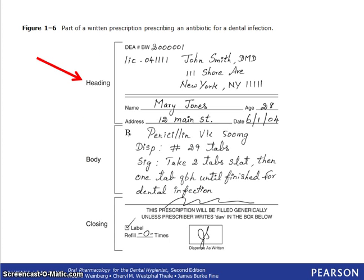As you see in this sample prescription, the heading contains the prescriber's name, address, and phone number, the patient's name, address, and age, and the date that the prescription was written. Also notice that in this example, the DEA and license number are in the heading. Usually they can be either in the heading or the closing.